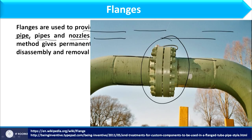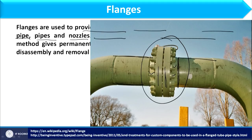A flange is basically a disc-type structure welded over the pipe. Flanges are made in pairs — one disc welded to each pipe. These discs must be aligned to each other to prepare a leak-proof joint. One flange is welded to one pipe, the second flange to the other pipe, and then these discs are connected through bolts. The whole assembly is called a flange.